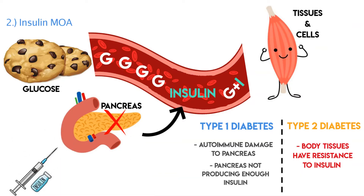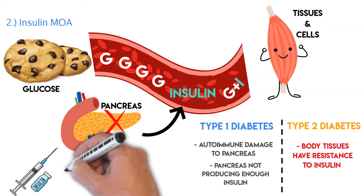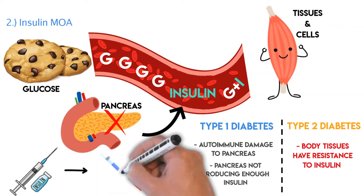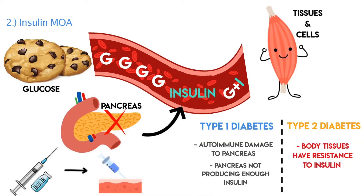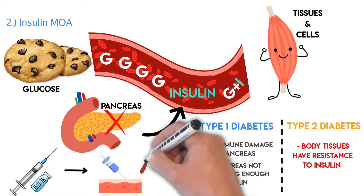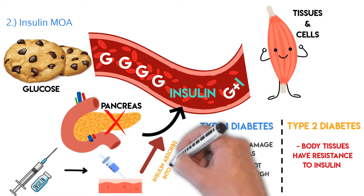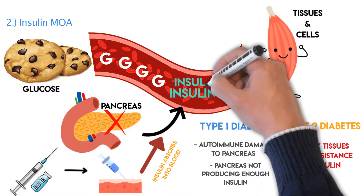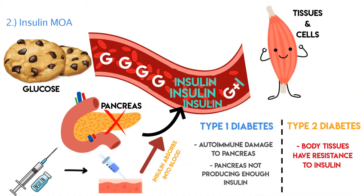The way administration works is straightforward. The patient draws up the insulin and injects it subcutaneously, either on the back of the arm or the abdomen, and that insulin slowly absorbs into the bloodstream. Now you have more insulin in the bloodstream to allow glucose to get into your cells.